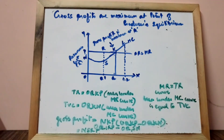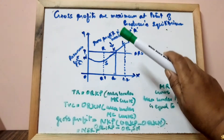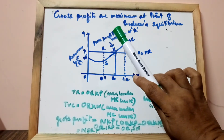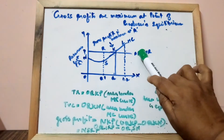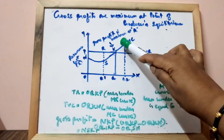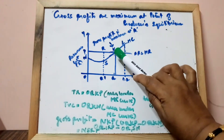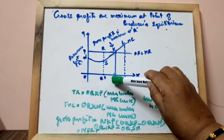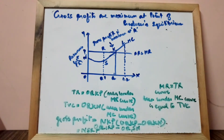Producer's equilibrium will be determined at point K, corresponding to OQ. Gross profits are maximum at point K, and any output level below or above point K would mean lesser profits.